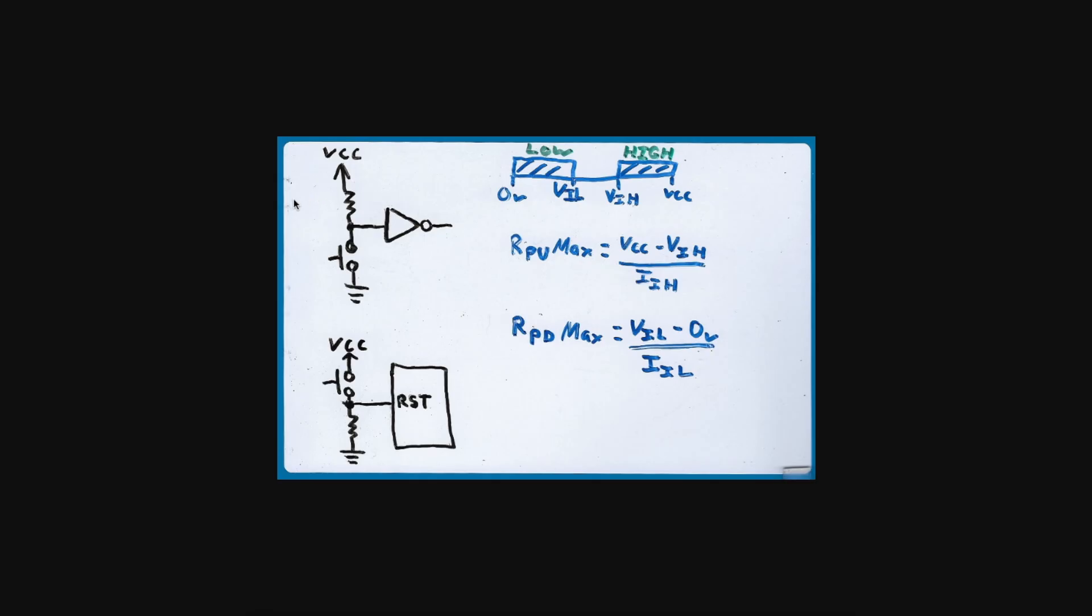In determining the maximum resistor value that should be used, that comes into play when the switch is open. So the only circuit path is the resistor to the input of the logic circuit. And whether it's a pull-up or a pull-down, there's going to be a certain amount of current flow through the input pin.